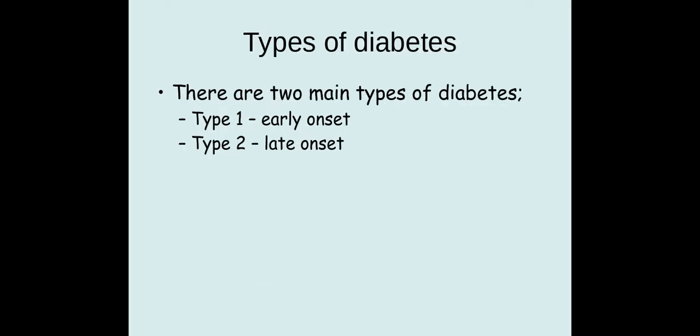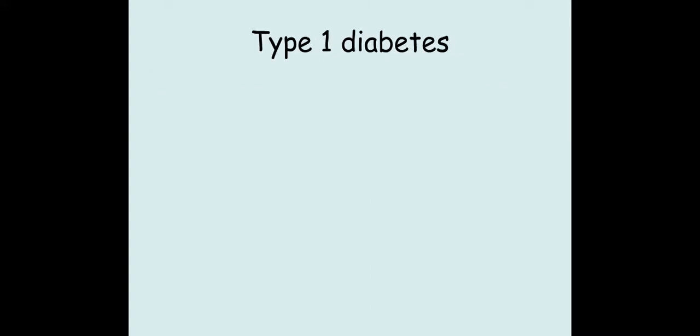In severe cases it can affect things like organ failure, because it can impact upon your eyes and also on your kidneys, which are very sensitive to high blood pressures. There are two types of diabetes that we need to know about: type 1 and type 2. Type 1 is early onset, which you usually get from birth and is usually hereditary, and type 2 is late onset, which you normally get later on in life.